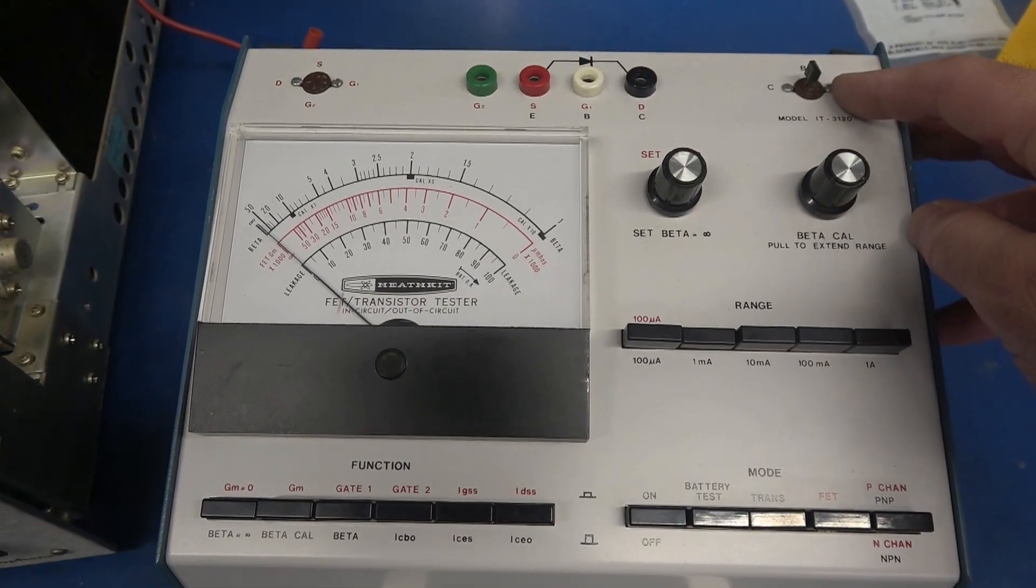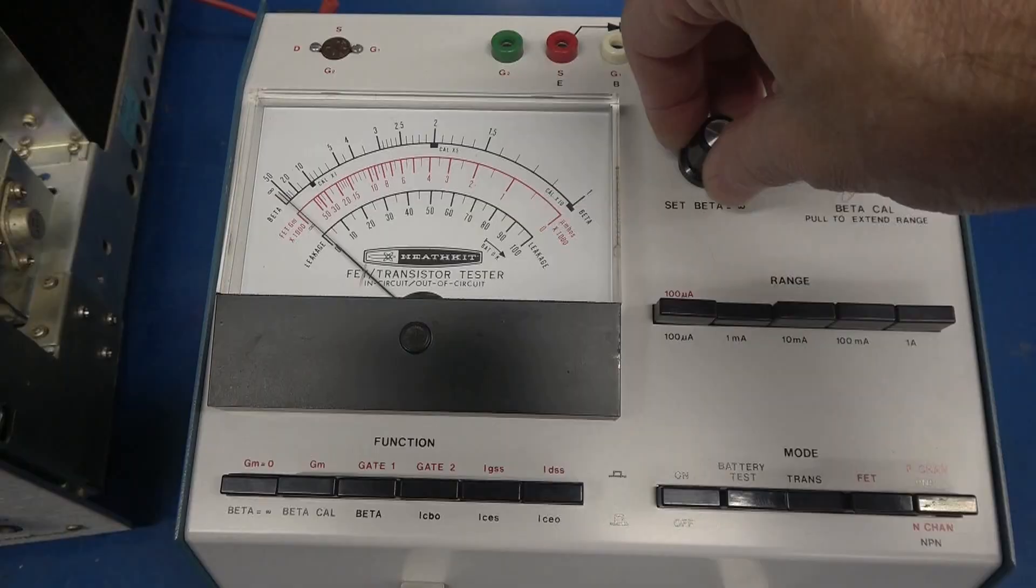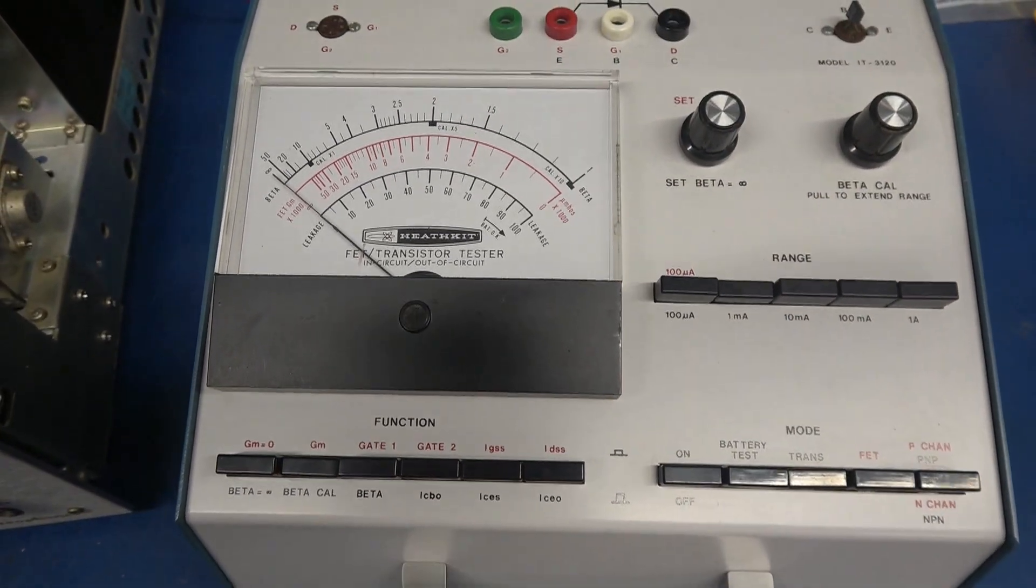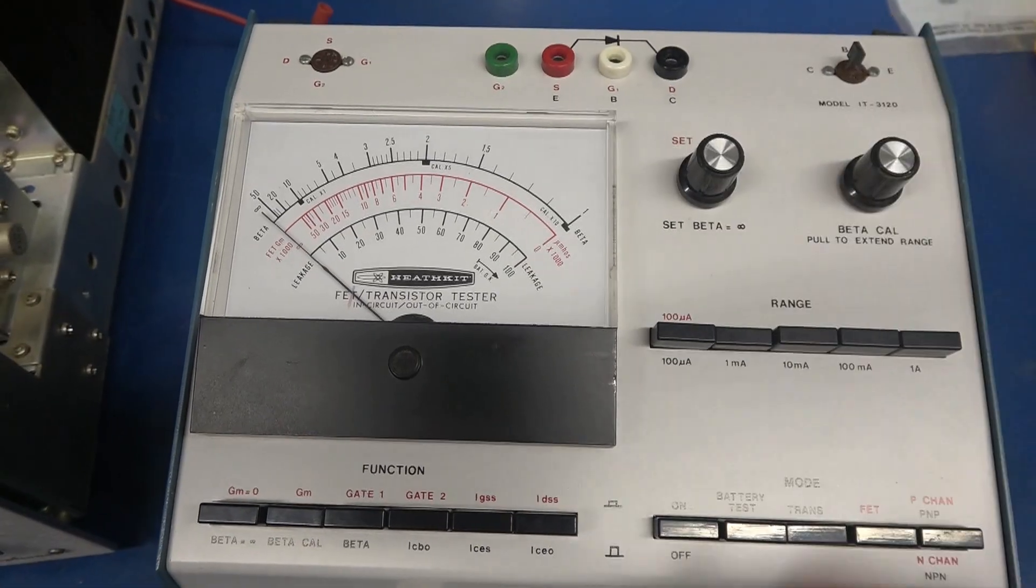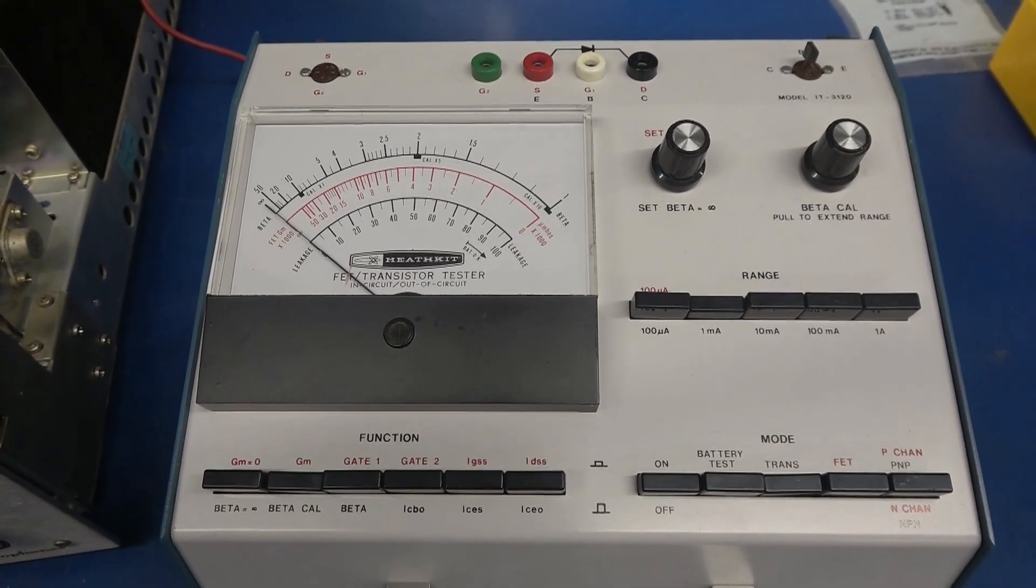Let's put in the one from the Marantz. That original transistor from the Marantz is installed. And then beta. I can zero it. But look at my beta cal. Not budging. So we have an open junction on the transistor. It was definitely bad.